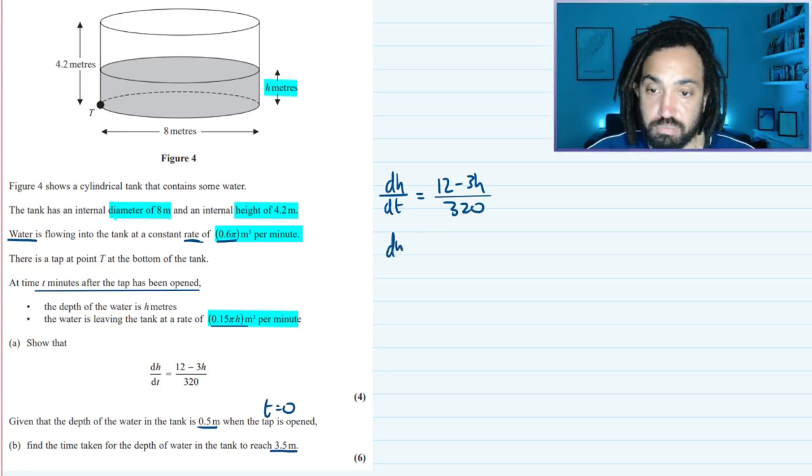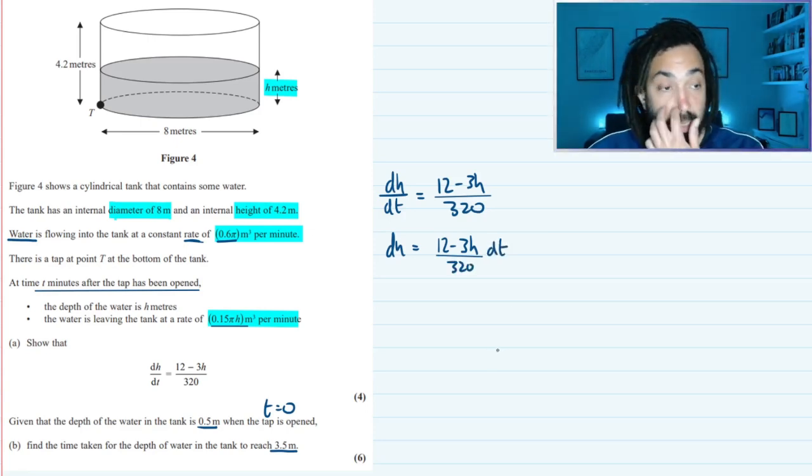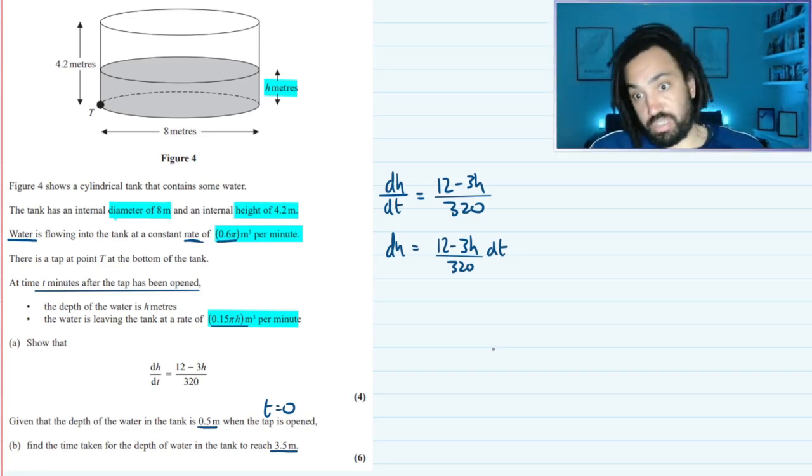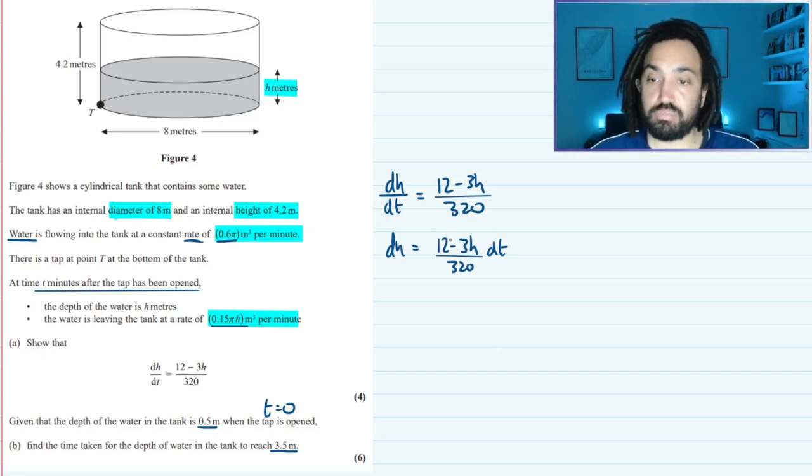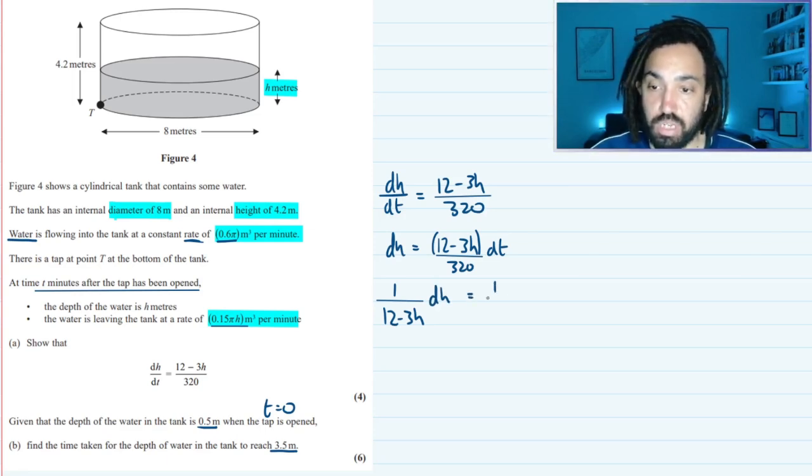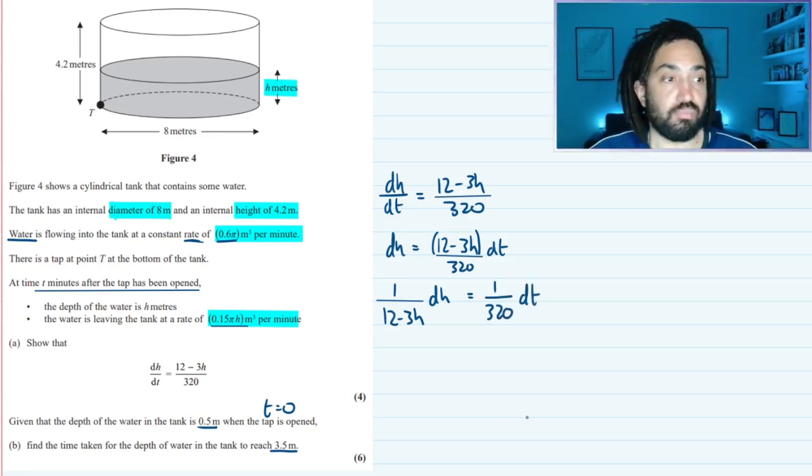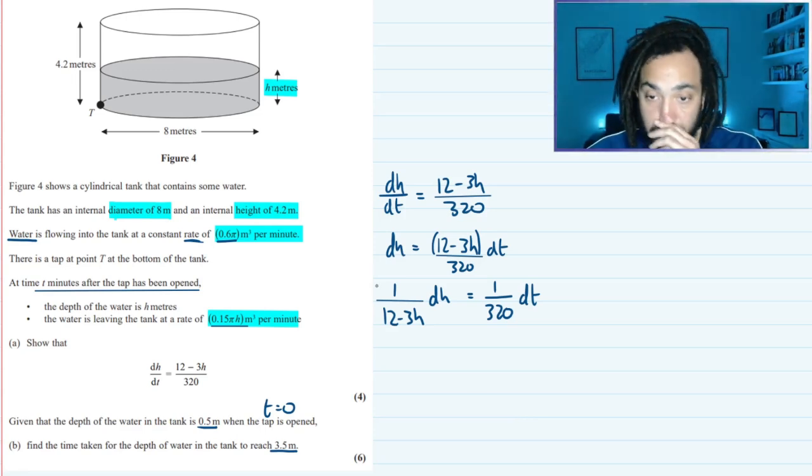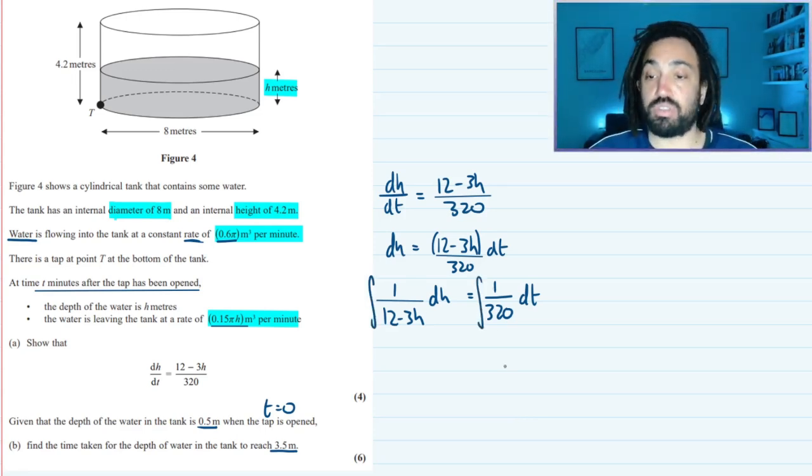So the first thing I like to do is multiply by dt. So that gives me (12 - 3h)/320 dt. And then I want to move the h term over to the other side, so I'm going to divide the whole thing by (12 - 3h). So it will be 1/(12 - 3h) dh = 1/320 dt. And then what we can do is integrate both sides now that we've got the variables on the right sides.